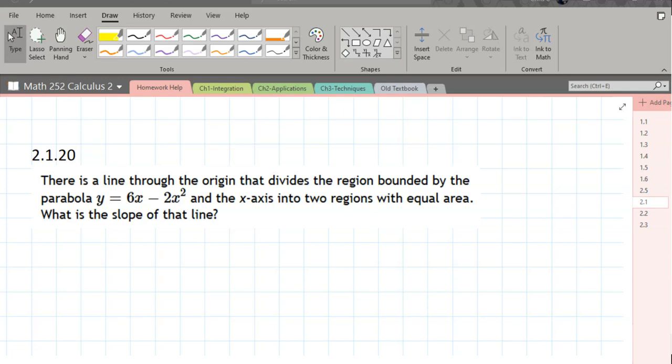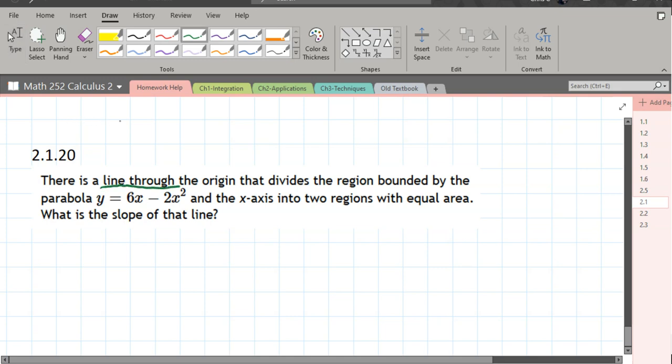This problem is tricky. It says there's a line through the origin that divides the region bounded by the parabola they give us and the x-axis as another bound into two regions with equal area.